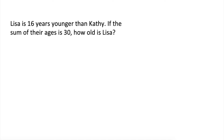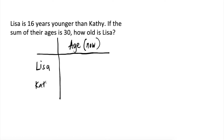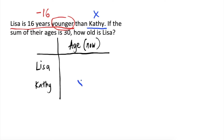Lisa is 16 years younger than Kathy. If the sum of their ages is 30, how old is Lisa? So, first, gumawa muna tayo ng table ng current ages ni Lisa and Kathy. Since 16 years younger, si Lisa, magsasubtract tayo from Kathy's age ng 16. I-assign naman natin ang age ni Kathy as x. So, ilalagay natin x. Sa age naman ni Lisa, we will write x minus 16.